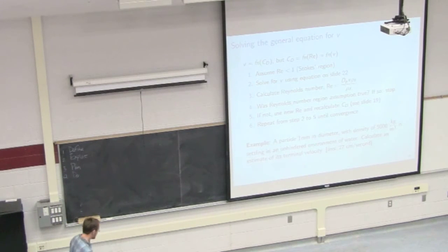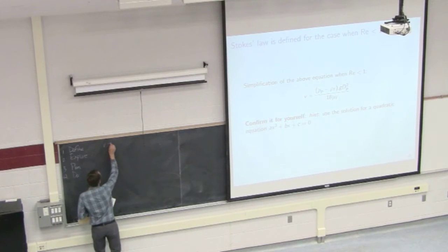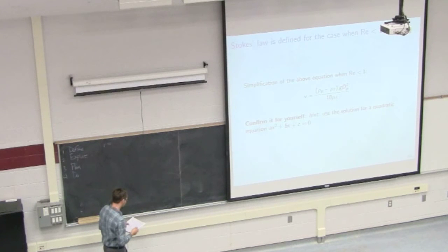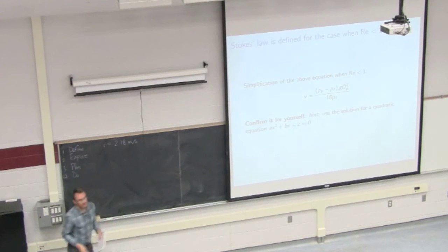So I'll just quickly give a summary of what your calculations should have looked like in this fourth step, the do. So as said, you assume Reynolds number is less than one. And if you do that, you calculate the velocity using the equation on slide 22. In other words, when Reynolds number is less than one, we're in Stokes' region. And so that velocity you sub into that expression. You can put in the values from last class and you get a value of 2.18 meters per second.